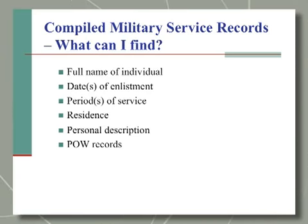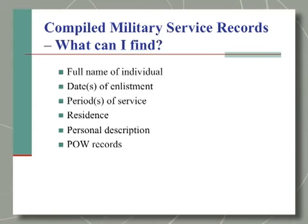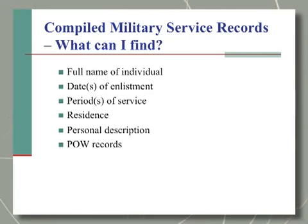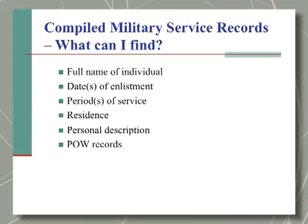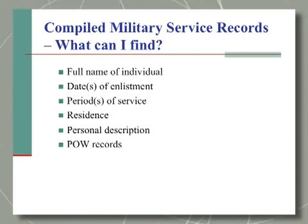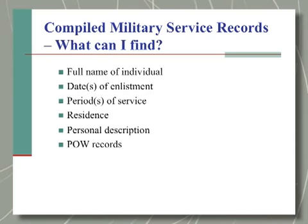What basic information can you find in a compiled service record for a volunteer soldier? It will give his full name, his dates of enlistment or when he was mustered into service, and also his dates of discharge or when he was mustered out. Sometimes it will give his period of service — if he enlisted for a three-year, two-year, or nine-month term. It usually gives his residence, where he was residing at the time he enlisted, and some personal information: sometimes a personal description including height, weight, eye and hair color. There will also be notations regarding specific activities or events during his service, such as assignment to special duty, capture and time in a prisoner of war camp, or hospitalization.